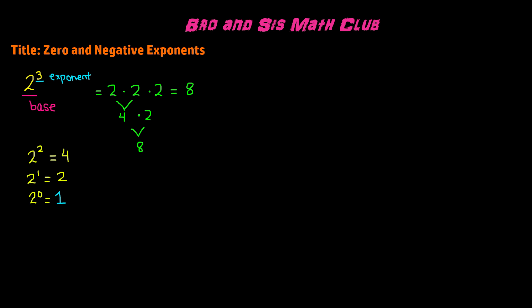We saw that 2 to the power of 3 was 8, 2 to the power of 2 was 4, 2 to the power of 1 was 2, and 2 to the power of 0 was 1. If you take each value and divide it by the base, you see the pattern: 8 divided by 2 gives 4, 4 divided by 2 gives 2, 2 divided by 2 gives 1. That's where 2 to the power of 0 equals 1 — it follows a specific pattern.